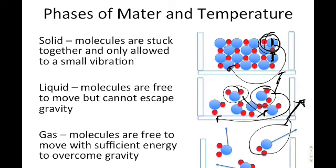In terms of density: objects are generally most dense when they're a solid, slightly less dense when they're a liquid, and least dense when they're a gas — with one exception, which is water. For most substances, density decreases from solid to liquid to gas because molecules go from being stuck together to being free to move.